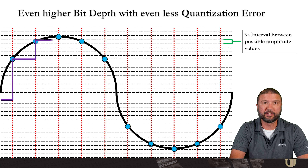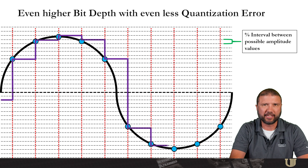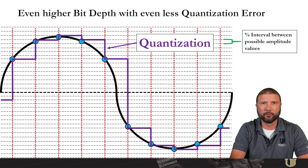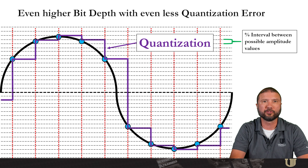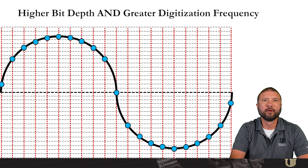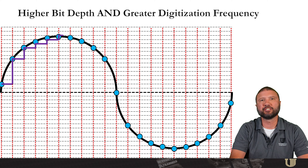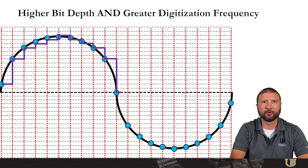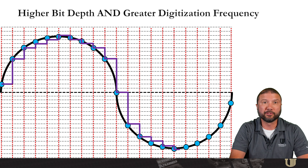Now we've increased the number of possible amplitude values even more by using a higher bit depth. Not every sample lands directly on a possible value, so there will still be some error. But the interval between possible values is getting smaller and smaller, meaning my quantization error also gets smaller. If we increase both bit depth and digitization frequency, the digital version of the waveform will get closer and closer to matching the original analog. But with more precision, the result is a larger data file and a slower scanning speed.